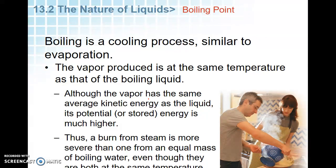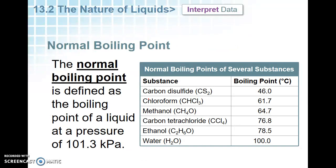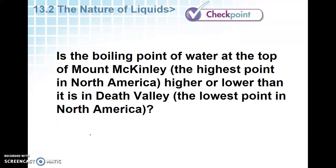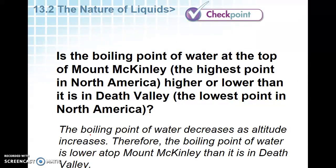Boiling is also a cooling process similar to evaporation — it pulls heat out. Although steam has the same average kinetic energy as boiling water, its potential energy is much higher. That's why a burn from steam is more severe than one from boiling water even at the same temperature — steam particles carry far more energy. Normal boiling point is when a substance boils at one atmosphere or 101.3 kPa. Altitude increases, pressure decreases, so the boiling point also goes down — it's lower at mountain tops than in the lowest valleys.